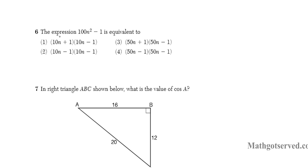So question 6 says the expression 100n² minus 1 is equivalent to. This is a difference of squares example. It's testing your ability to factor the difference of squares. How do I know the difference of squares? 100 is a square, n² is a square, and 1 also is a square. So the difference of squares formula is given by a² minus b² equals (a + b)(a - b).